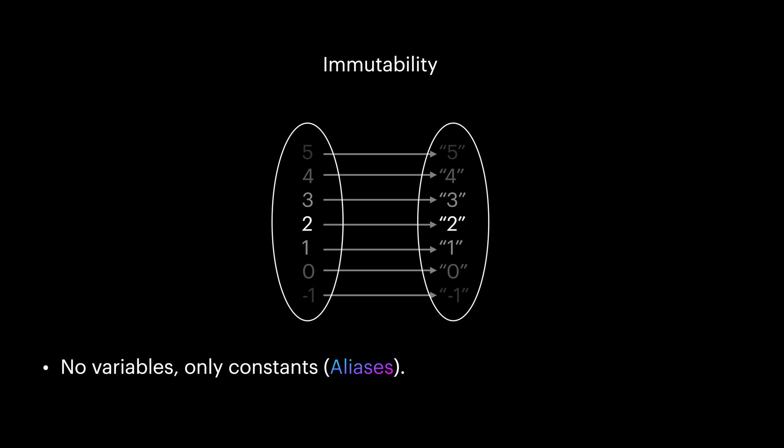In functional programming we never mutate and change any values or variables. We only create new values from old ones by doing transformations. This is called immutability.